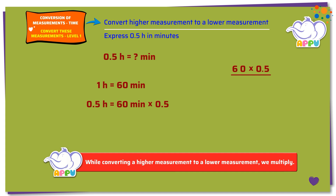First, we multiply the number in the ones place by 5, which is 0 times 5 equals 0. Next, we multiply the number in the tens place by 5, which is 6 times 5 equals 30. We get 300.